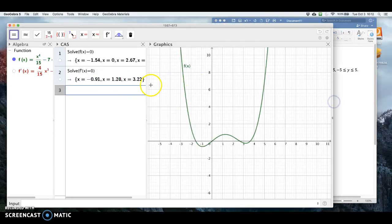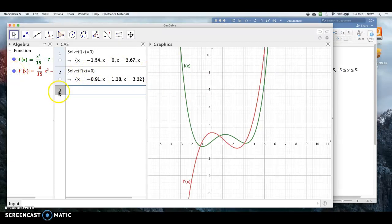So if I make this bigger, and this is when the derivative equals zero. So I'm going to click on the red. So notice the derivative equals zero is about minus 0.91, so right here, about 1.28, right here in the red graph, and 3.22, a little bit greater than 3.